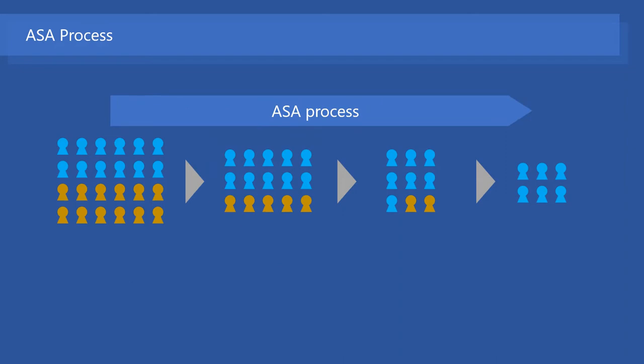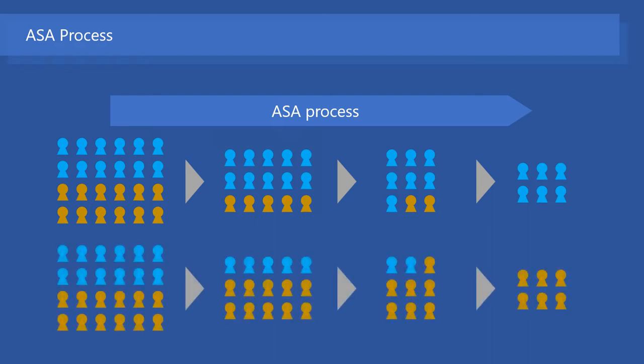The attraction, selection, and attrition as a whole are called the ASA process for short. Different kinds of organizations will attract different kinds of people, so through the ASA process, while within-organization homogeneity increases, between-organization variability also increases. Thus, the process relates to variability in organizational culture and behavior.